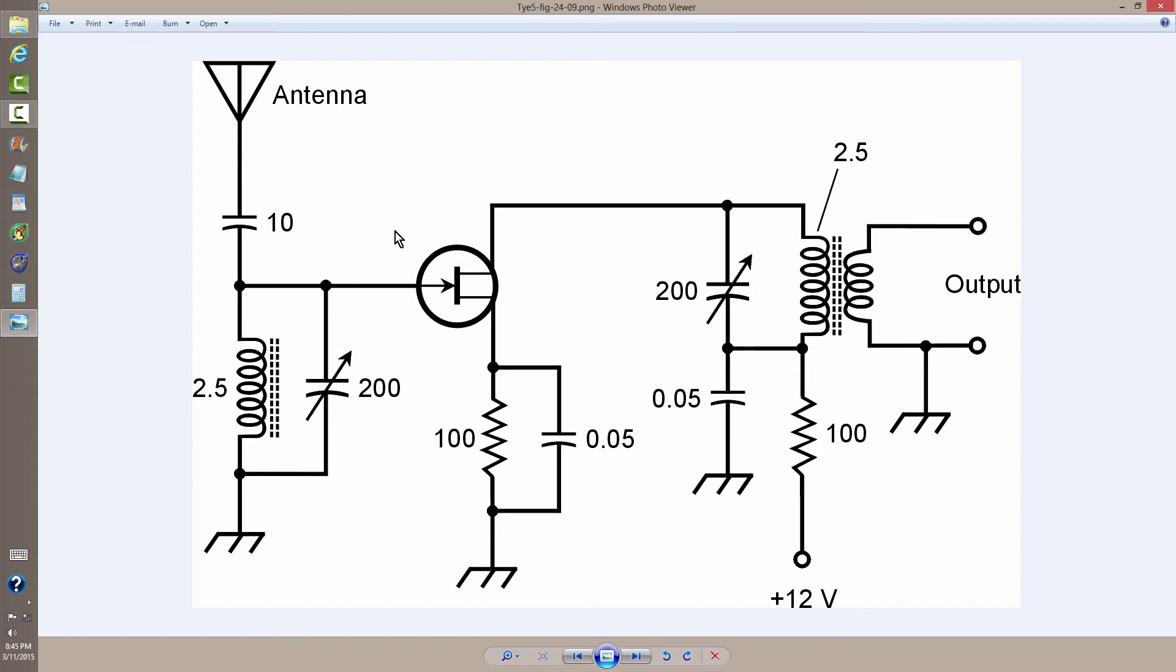But this is an example of a pre-amplifier for a radio receiver, actually. Here's the antenna. Here is a tank circuit right here, another tuned circuit.